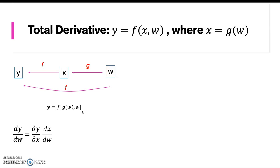And the second is the partial derivative of y with respect to w, ∂y/∂w. So this is the final result of the total derivative, or the rate of change of y.